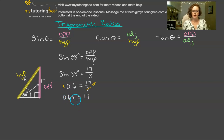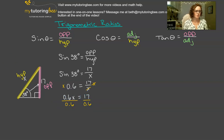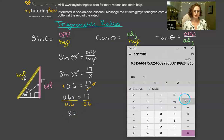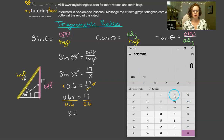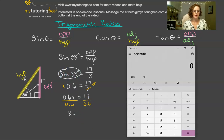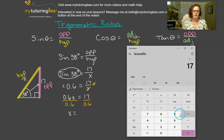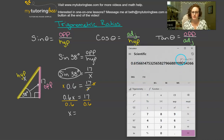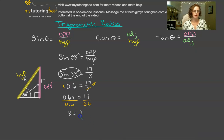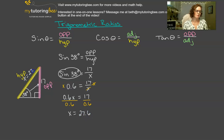And now to solve for x, I'm going to divide by 0.6 on both sides to keep the equation equal. I can also make it a little bit more exact — I know that 0.6 came from my sine of 38 degrees, so I can do 17 divided by the sine of 38. When I hit equals, it gives me 27.6. So x equals 27.6 units.